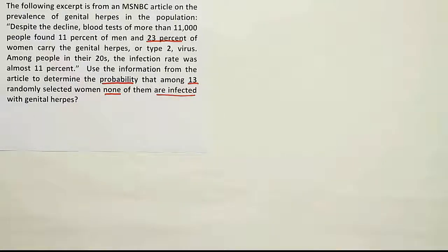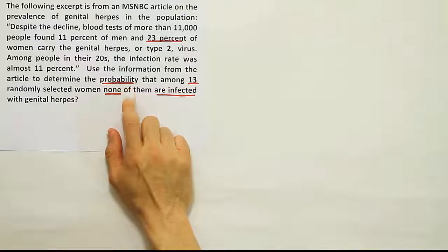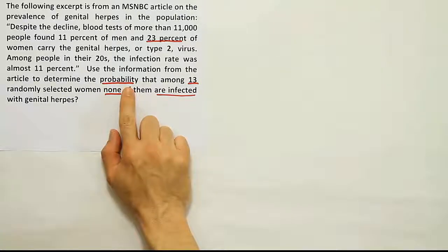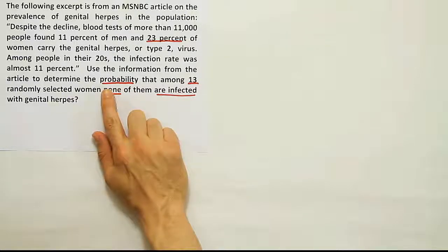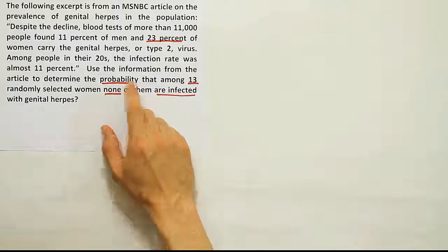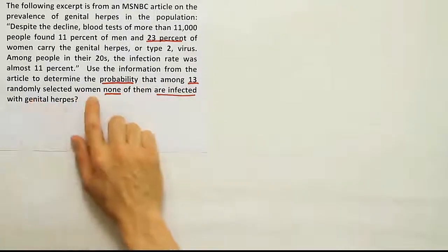I've underlined some key phrases in the problem here. They're going to help us solve it. These key phrases tell me right away that it's the multiplication rule of probability we're dealing with here. The reason why is because they ask us to determine the probability.